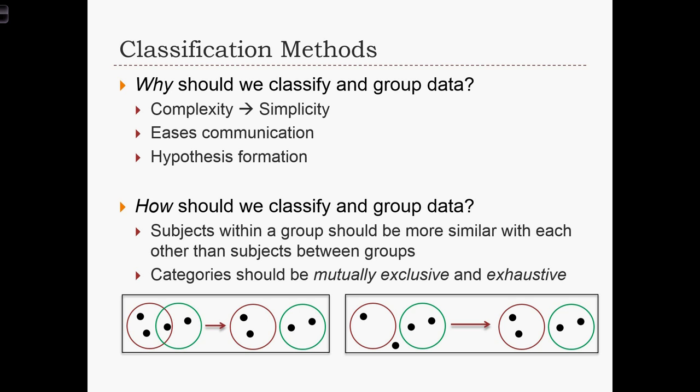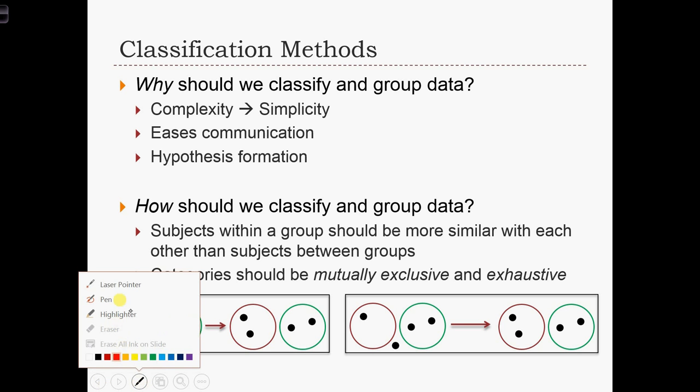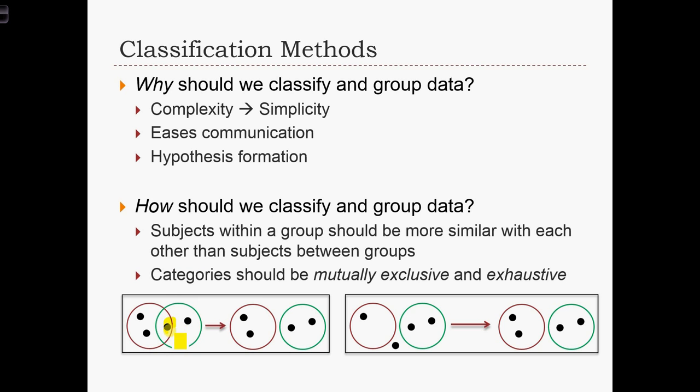In addition to this, we'd also like to make sure that when we categorize our data, our categories are mutually exclusive and exhaustive. Mutually exclusive means that none of the data elements — depicted here by the dots — exist simultaneously in more than one group. On the left-hand side, we see that this data element exists in both the red group and the green group, which we want to avoid.